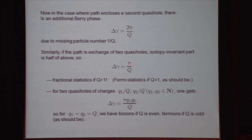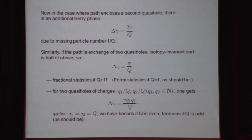This statistics phase factor is a fractional multiple of pi. If Q equals 1 we have Fermi statistics — correct, because Q equals 1 is a free fermion system and the quasi-hole is an ordinary hole. It's easy to generalize to charges little q1 times 1/Q and little q2. If q1 and q2 are both equal to big Q, these quasi-holes become equivalent to real holes which are either bosons or fermions. This becomes pi times Q, so if Q is even it's a boson and if Q is odd it's a fermion. The statistical phase is only meaningful modulo 2 pi.